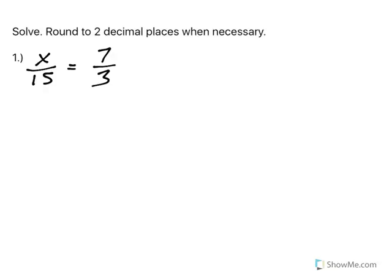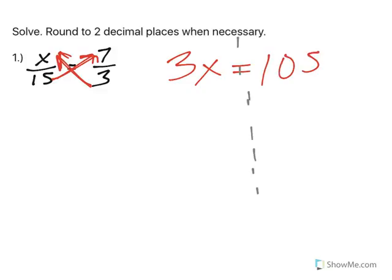So when you have a straight up proportion, remember we're going to cross multiply to solve these. When I cross multiply, that means 3 times x is 3x, 15 times 7 gives me 105. I need to divide by the number in front of x on both sides. So x equals 35.